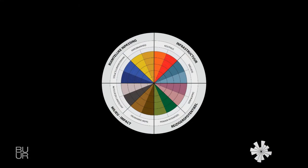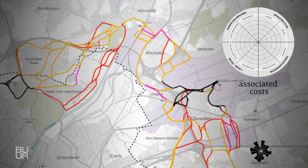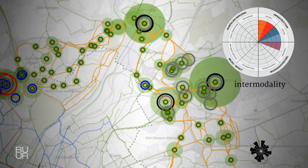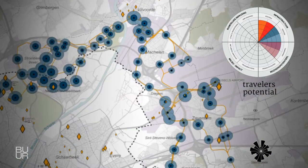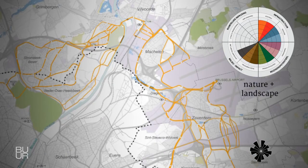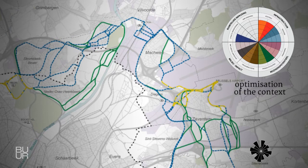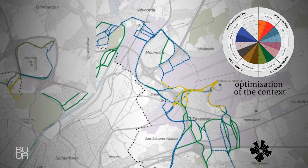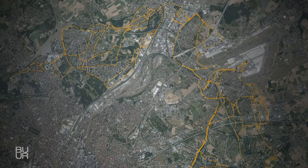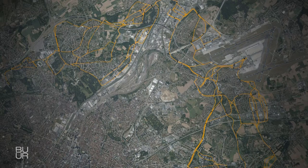Finally, the evaluation: 16 criteria are evaluated, including the direct and indirect costs, speed and punctuality, intermodality with public and private transports, primary travellers potential of inhabitants and detractors, preservation of human relations, impact on nature and landscape, optimization of the territorial surroundings, and spatial integration of the tram infrastructure and stops. Thousands of kilometers of options can be compared to optimize the network.